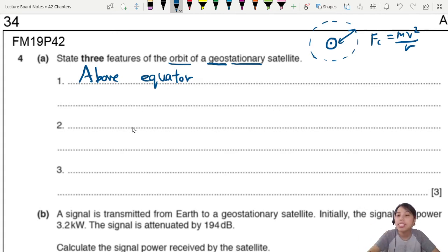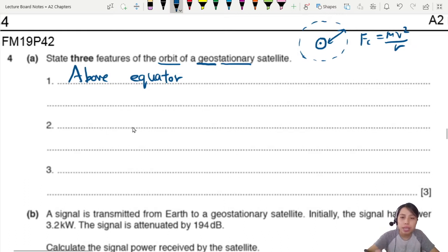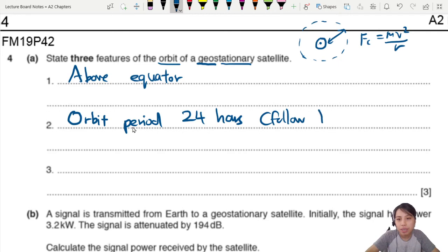And you want to go geostationary. Other features that we can include is talk about the orbit period. If you always want to point at the same place on Earth, then your orbit period must also be 24 hours like the Earth's rotation. So this is following Earth's rotation.